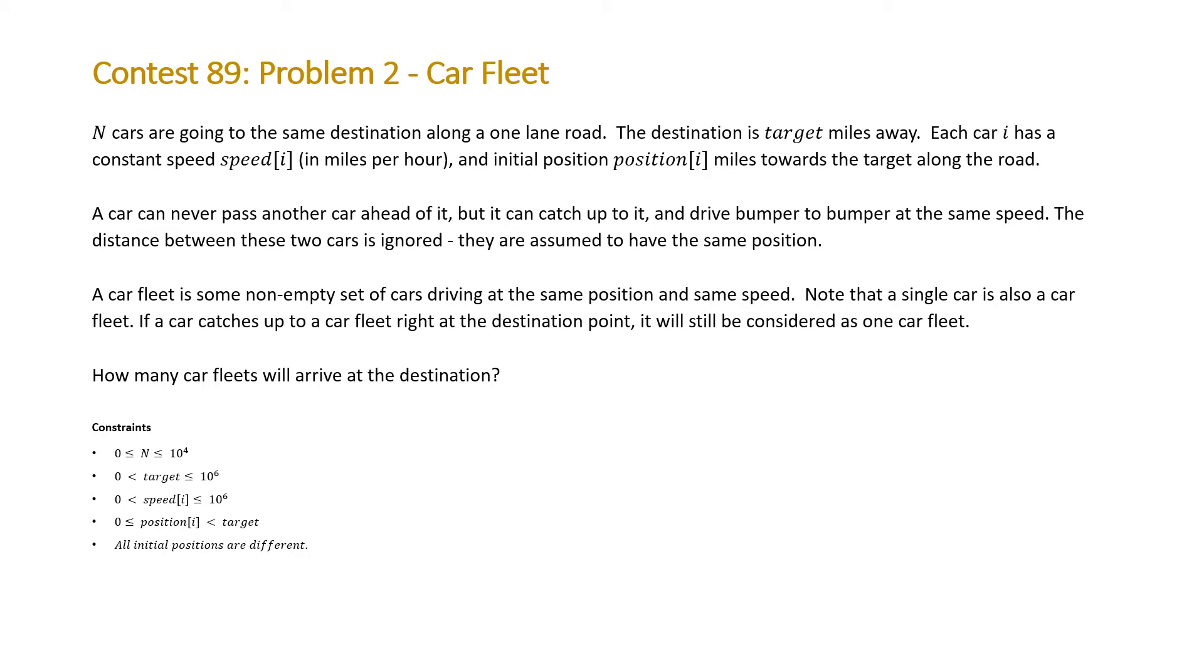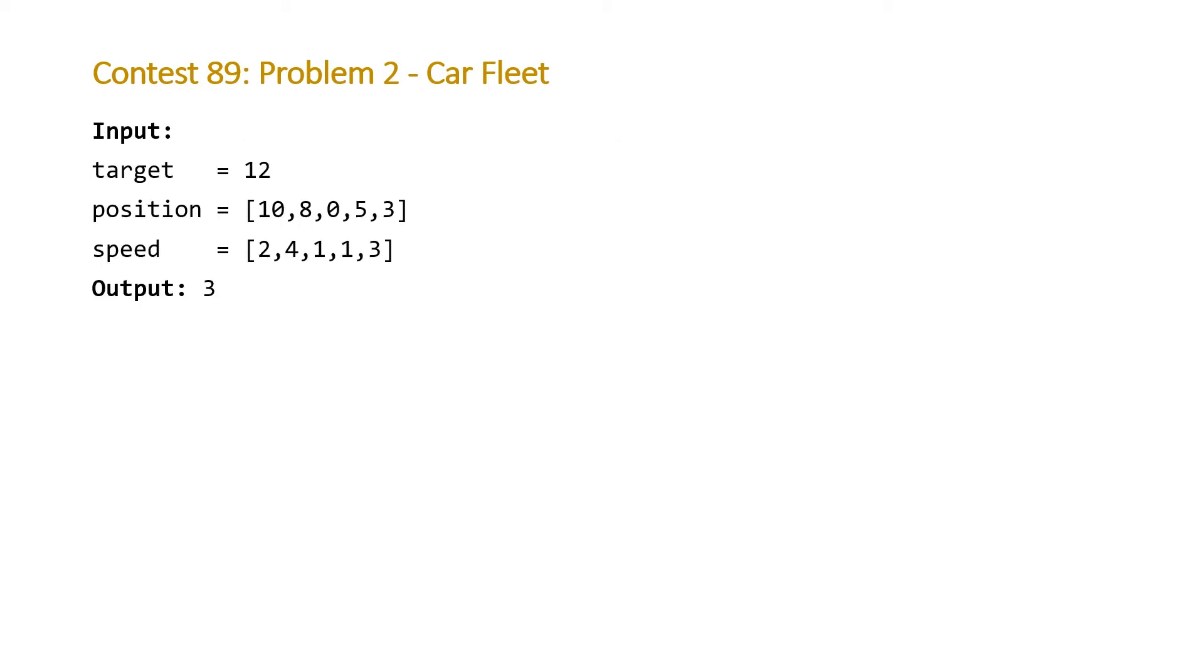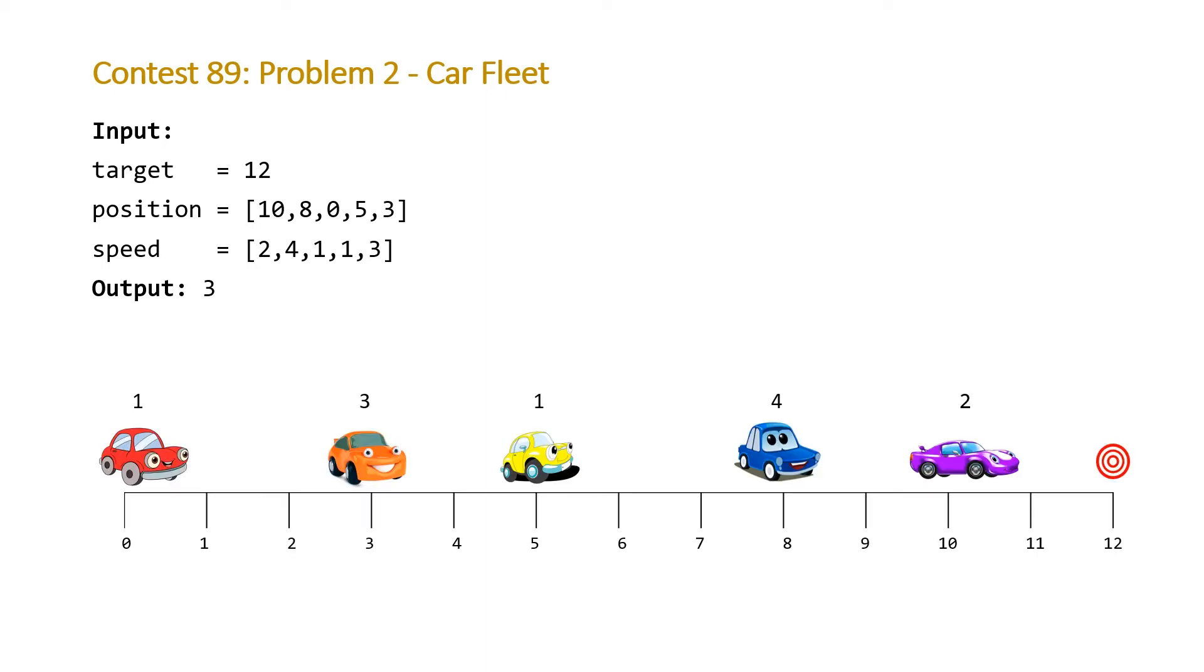Let's take a look at the example that Leak Code provided us with. Here is the example. The target is 12. We're given the initial positions of the cars and the initial speeds of the cars. The question, the example is saying that the answer is going to be 3. There's going to be three fleets of cars that arrive at the destination at different times. Let's take a look at how we would work through this. Visually, this is what this data is telling us. Our target is at 12, and we're given initial positions 10, 8, 0, 5, and 3. The corresponding speeds in miles per hour, which is very slow, these cars are driving, are going to be given by the speed array.